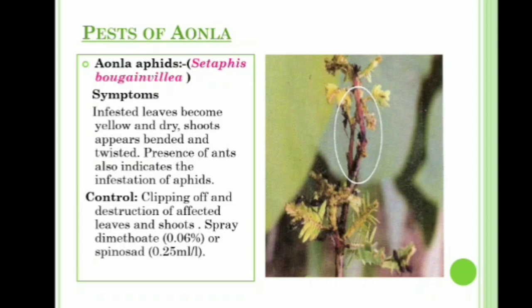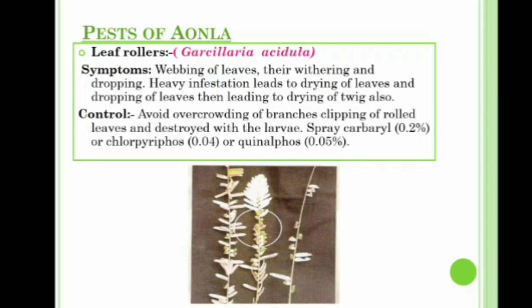The next pest is Amla aphids (Schizoneura bougainvilliae). Symptoms: infected leaves become yellow and dry, shoots appear banded and twisted, and presence of ants also indicates aphid infestation. Control: clip off and destroy affected leaves and shoots, then spray Dimethoate 0.06 percent or Spinosad 0.25 ml per liter.